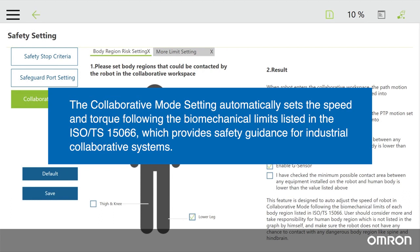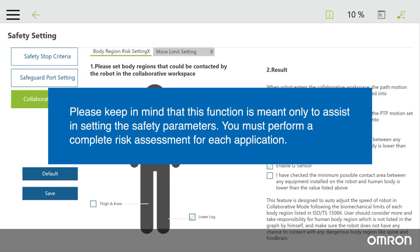The Collaborative Mode setting automatically sets the speed and torque following the biomechanical limits listed in the ISO Technical Specification 15066, which provides safety guidance for industrial collaborative systems. It is a very convenient tool. However, please keep in mind that this function is meant only to assist in setting the safety parameters. You must perform a complete risk assessment for each application.